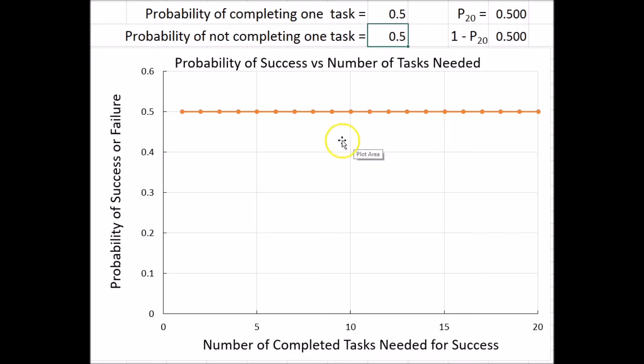You're just as likely to complete 20 tasks before failing to complete 20 as completing one task before failing to complete one task.